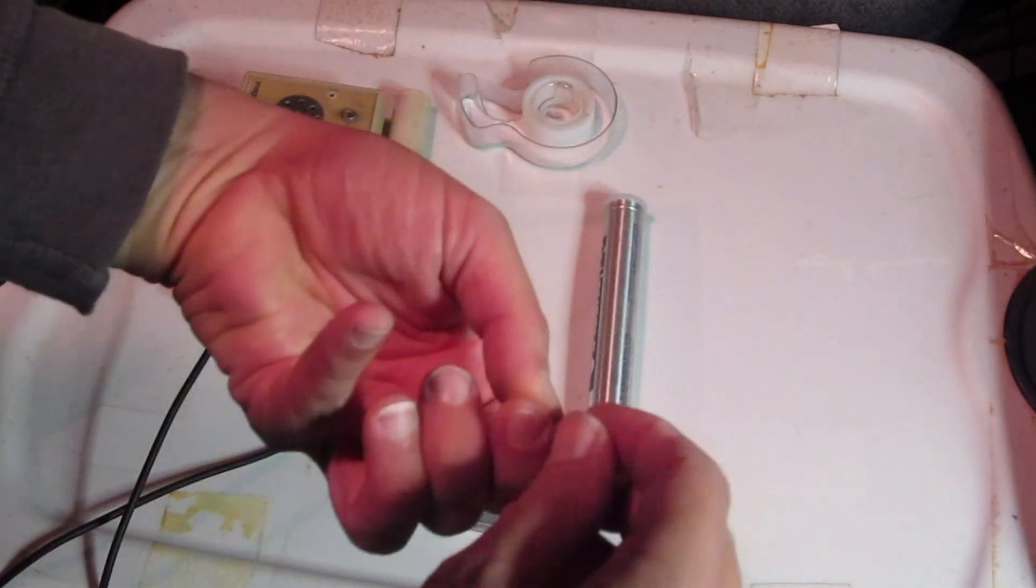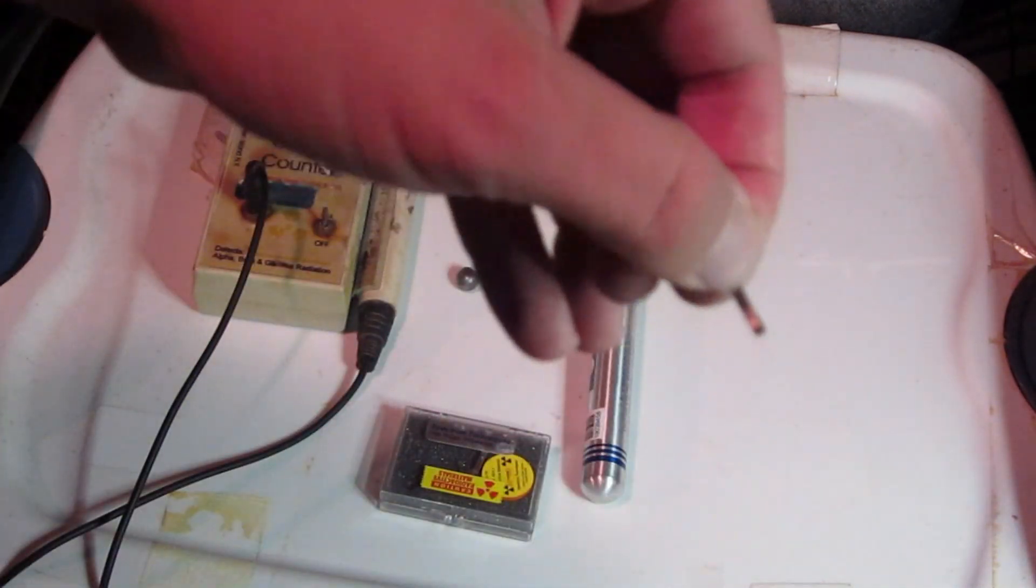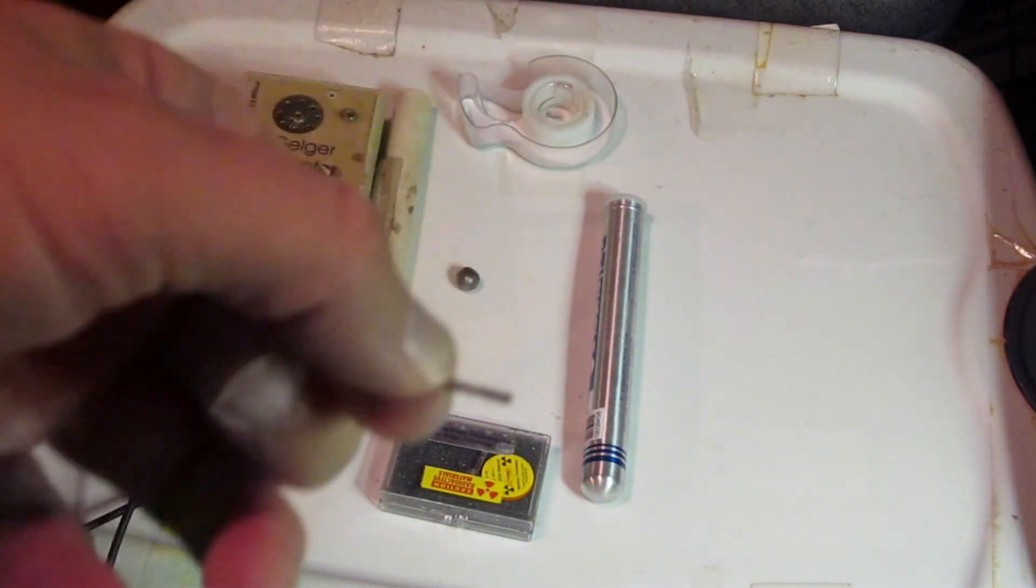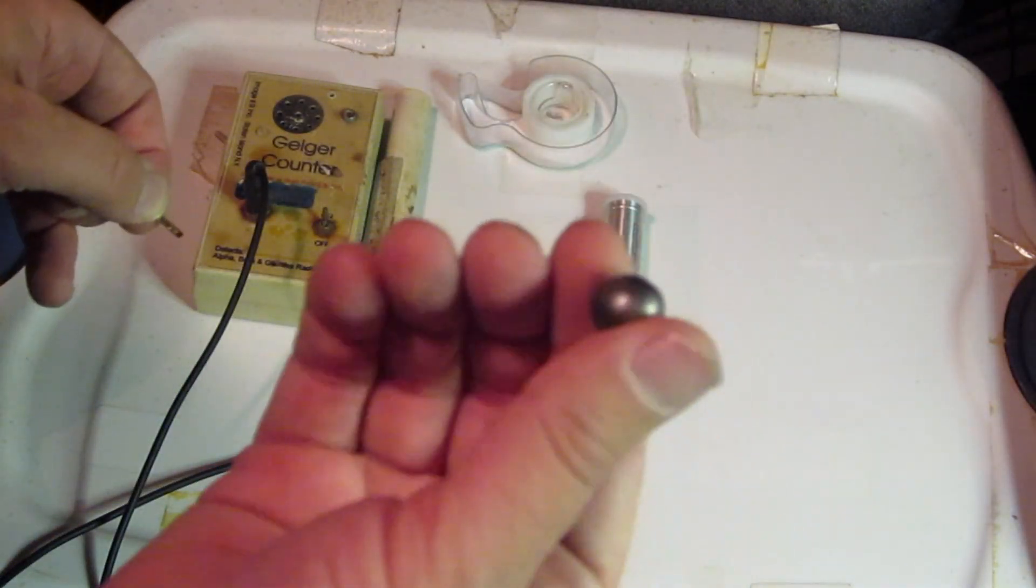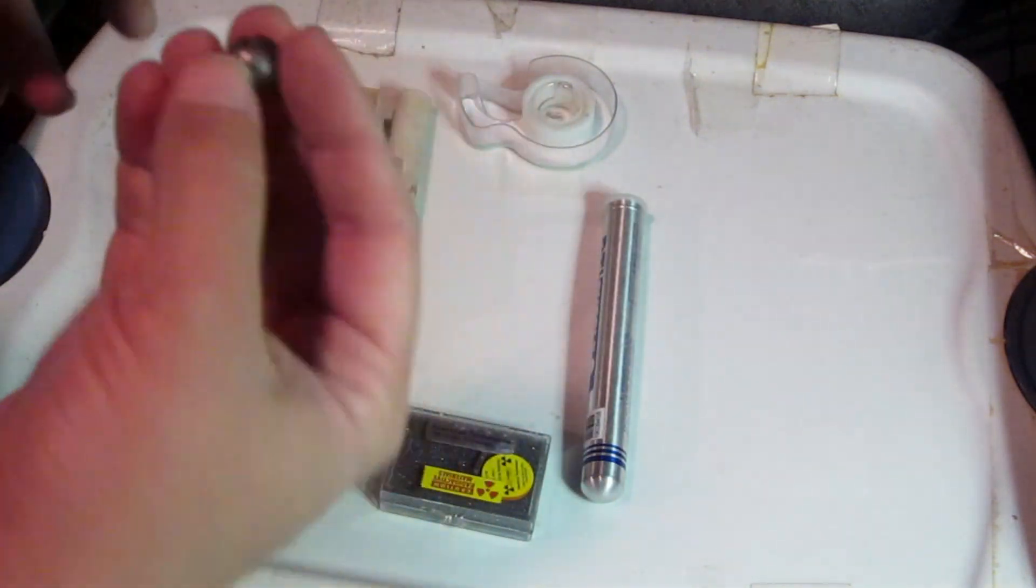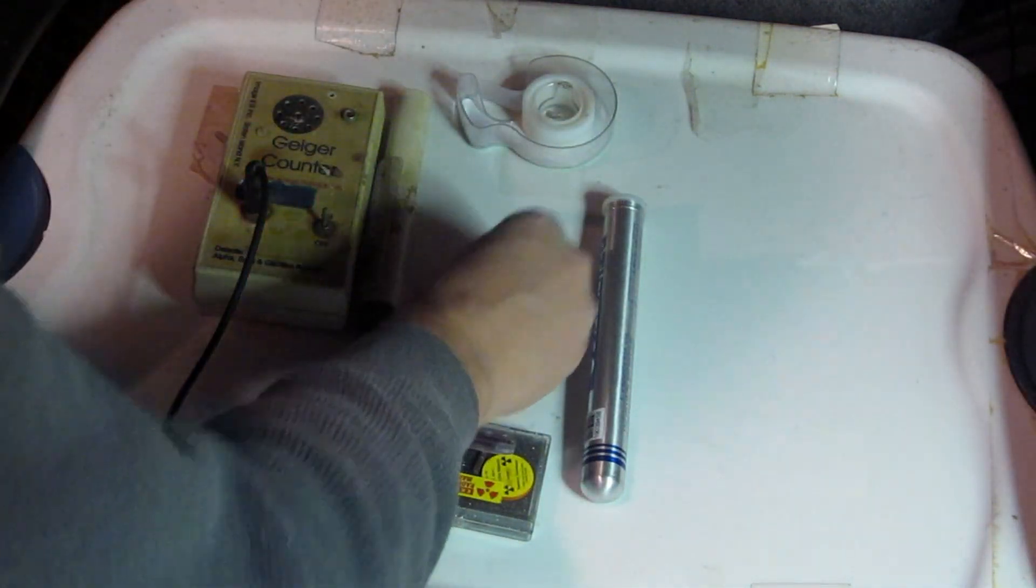So this is the side with the alphas coming out of it, the shiny yellow side, and we have a little thing of beryllium here, and we got some tape here.